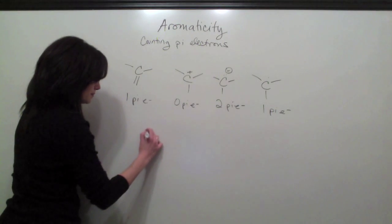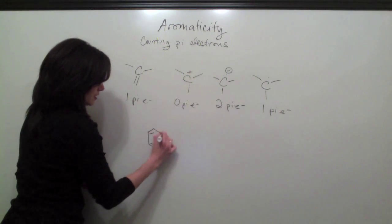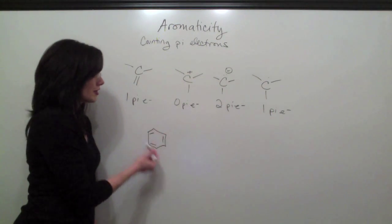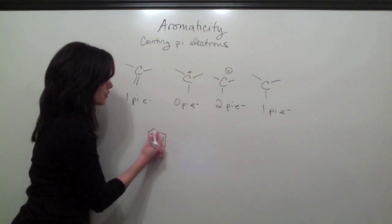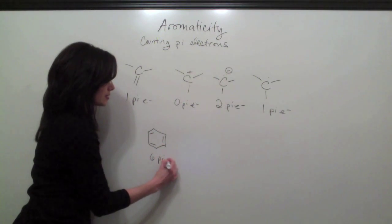Just to show you a few examples. Benzene, in which all the carbons are just regular sp2s, counts as one, two, three, four, five, six, six pi electrons.